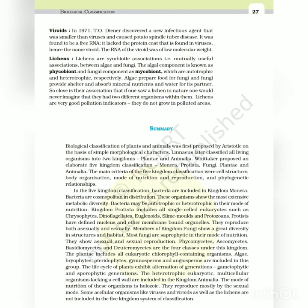Members of Kingdom Fungi show a great diversity in structures and habitat. Most fungi are saprophytic in their mode of nutrition. They show asexual and sexual reproduction. Phycomycetes, ascomycetes, basidiomycetes and deuteromycetes are the four classes under this kingdom. The Plantae includes all eukaryotic chlorophyll-containing organisms. Algae, bryophytes, pteridophytes, gymnosperms and angiosperms are included in this group. The life cycle of plants exhibit alternation of generations - gametophytic and sporophytic generations.